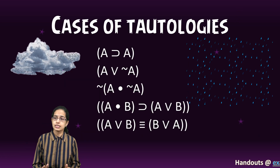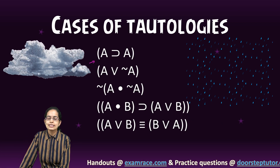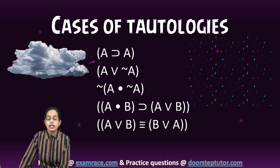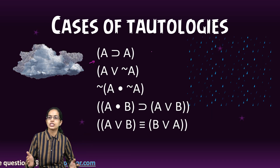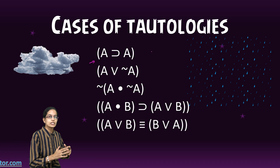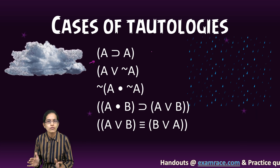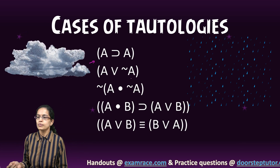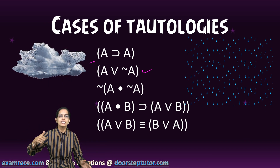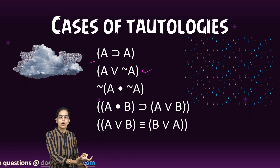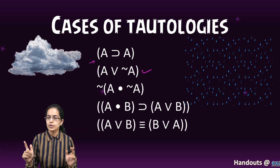Some cases where tautologies are true: first, 'If A then A' — meaning if it is raining, then it is raining — this is 100% always true, and therefore a case of tautology. Next, 'A or not A' — the same Indira Gandhi example: she was assassinated or she was not. This statement would always be true.